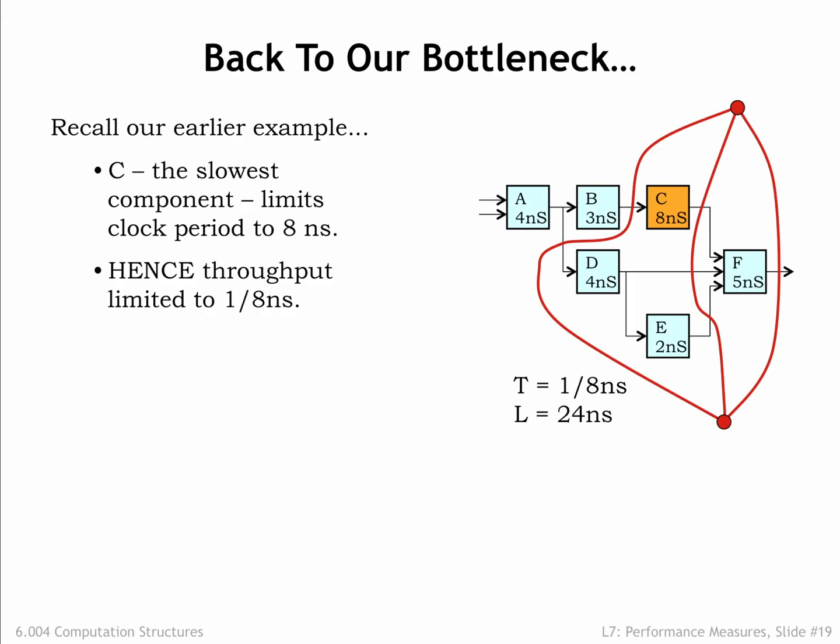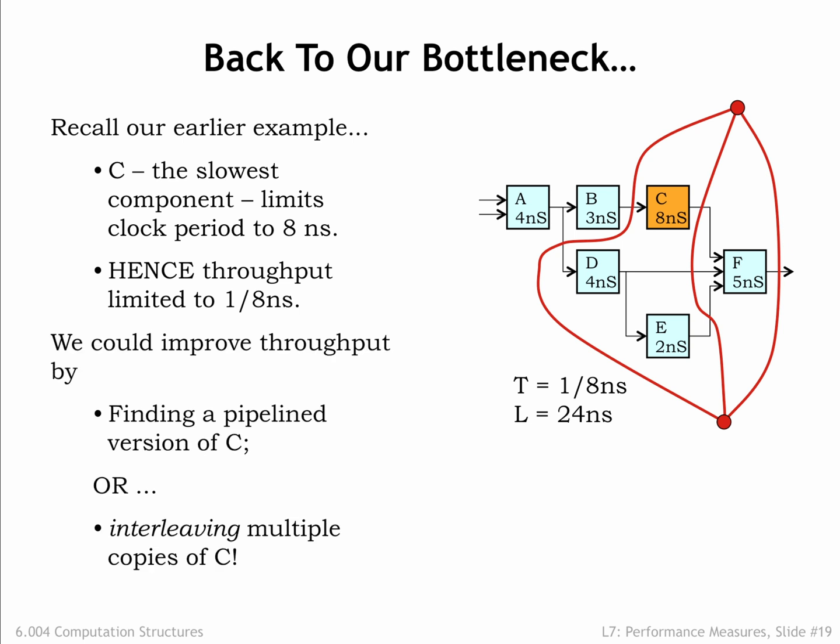Returning to the example of the previous section, we couldn't improve the throughput of our pipeline system past 1 over 8 nanoseconds because the minimum clock period was set by the 8 nanosecond latency of the C module. To improve the throughput further, we either need to find a pipeline version of the C component or use an interleaving strategy to achieve the effect of a two-stage pipeline using two instances of the unpipelined C component.